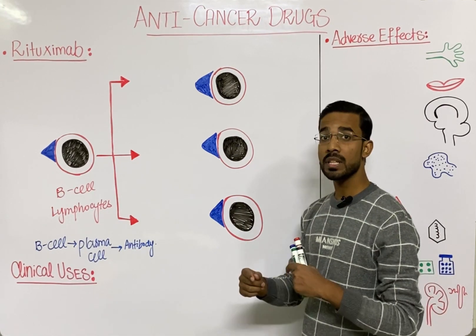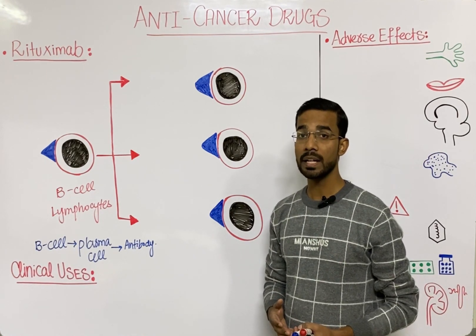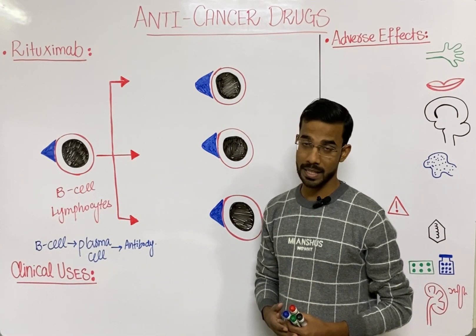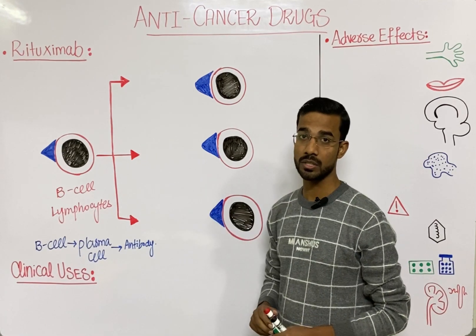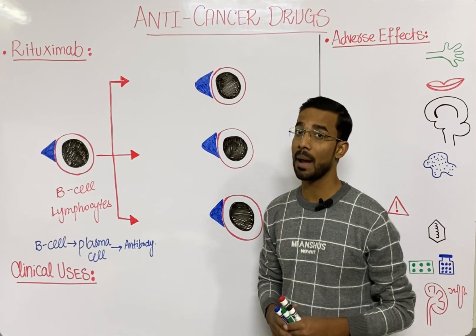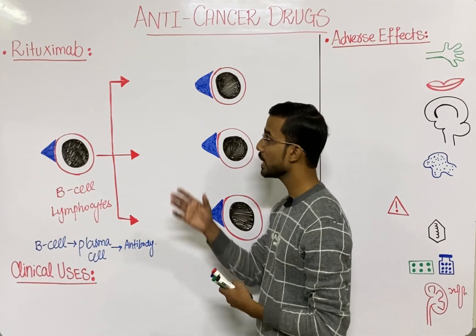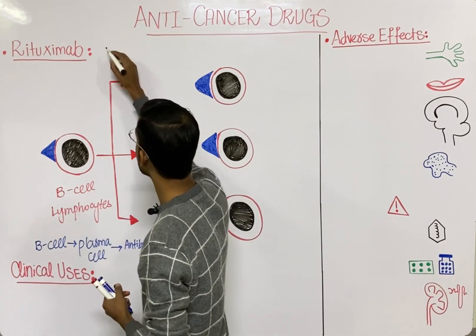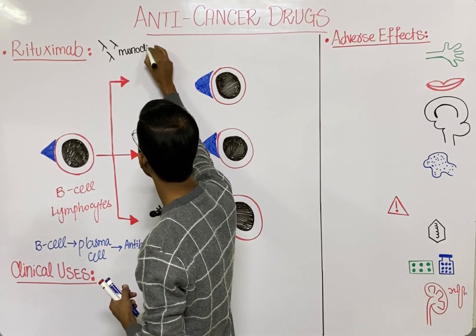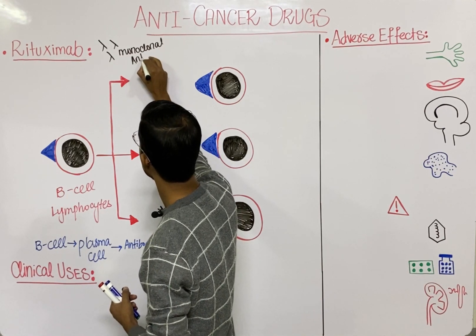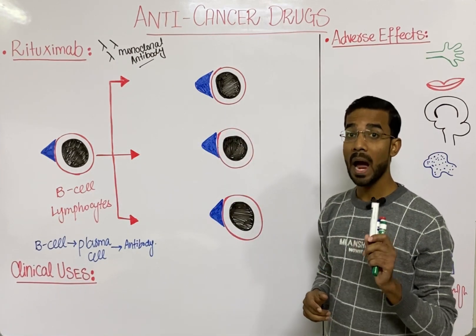When you see unlimited proliferation of B cells, it can result in cancer. Our main focus is to stop the replication or destruction of B cells that are abnormal. In this case, we give Rituximab, which is basically a monoclonal antibody. We will destroy the B cells with the help of these antibodies.